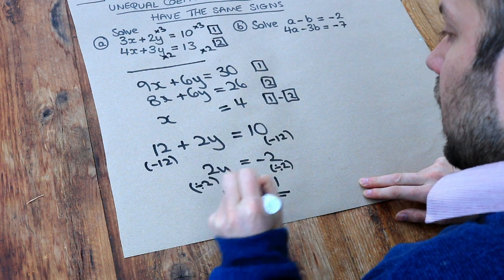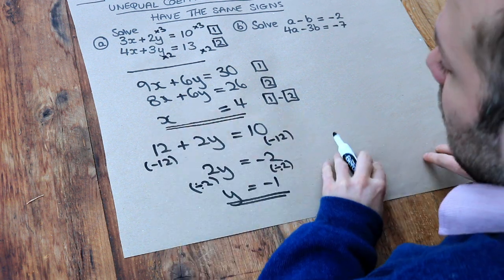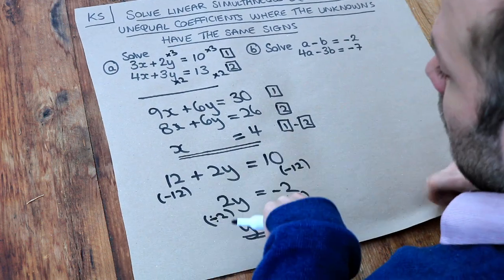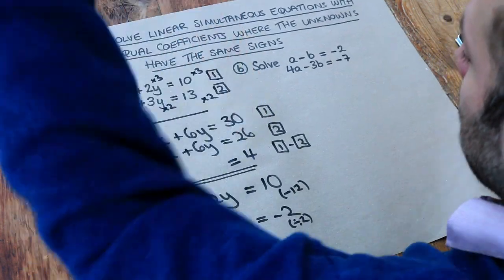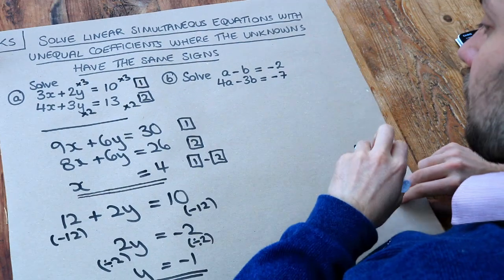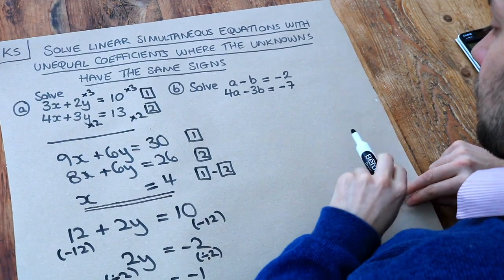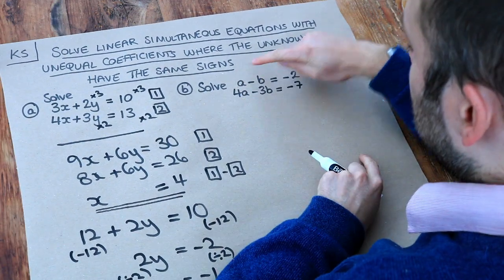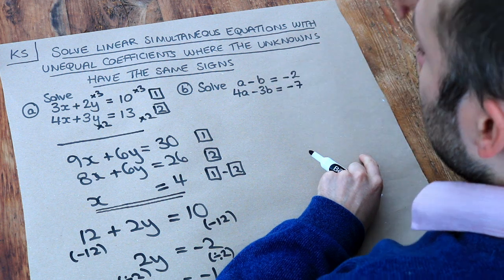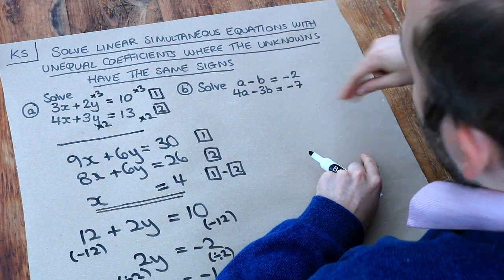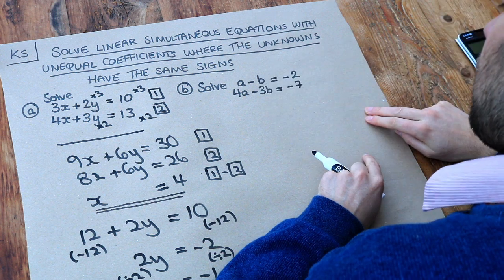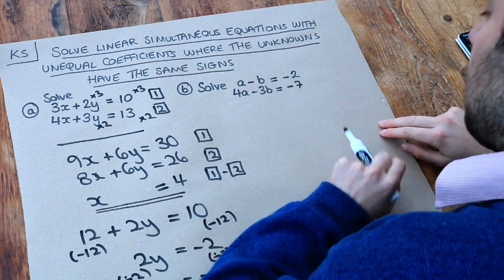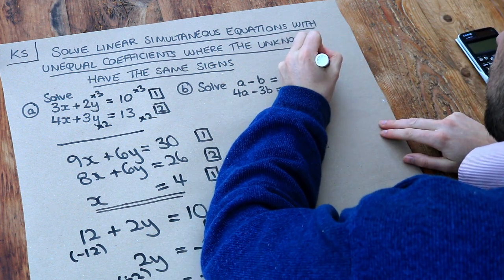So we've got our value of y and we've got our value of x, and we're done. And we could check our values by substituting these into both equations, but I know this answer is right. Right, what about the second one? Now again, the numbers in front of the a's are different, the numbers in front of the b's are different. Let's just say I want to eliminate the b's again. We could eliminate the a's if we wanted to, but I'm going to eliminate the b's. I'm going to make these values the same. So if I call these equations 1 and 2.